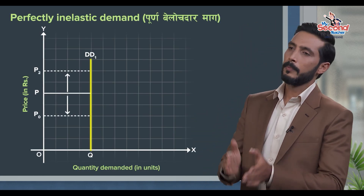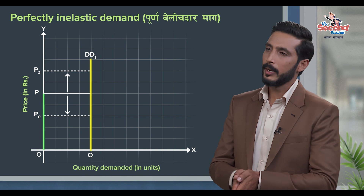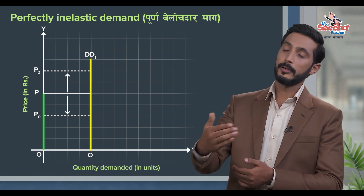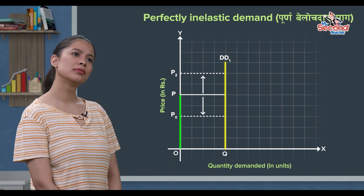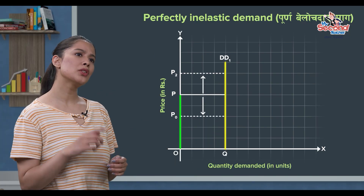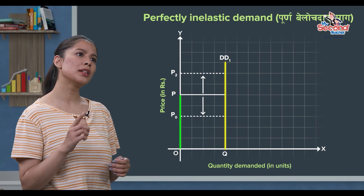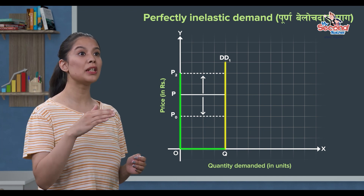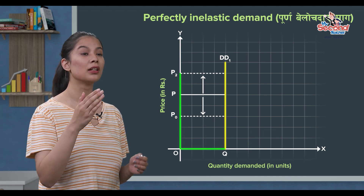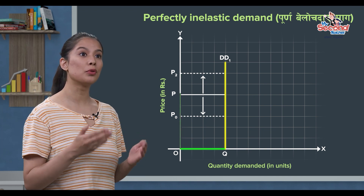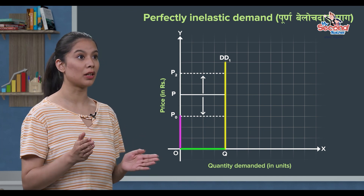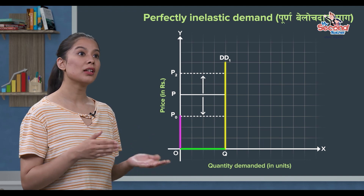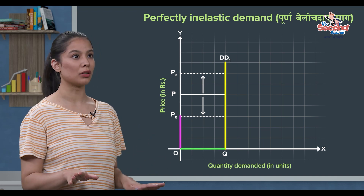Now, what is the quantity demanded at price OP? At price OP, the demand is OQ. And at price P2, the demand is still OQ — confirming the perfectly inelastic demand curve.